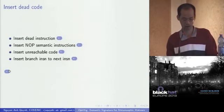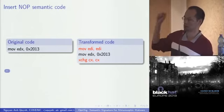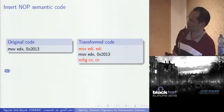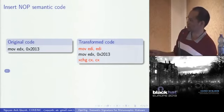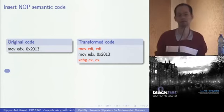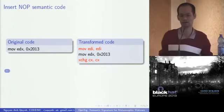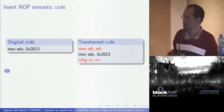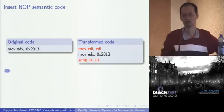Another method is insert no-operation semantic instruction. The malware, when transforming the code, inserts some code that actually does nothing. The original code is on the left side. When the malware transforms it, it inserts two instructions — one before and one after. You can see that 'move EDI to EDI' does nothing, and 'exchange CX with CX' does nothing — exchanging a register with itself. The left code and the right code look very different, but they do the same thing.